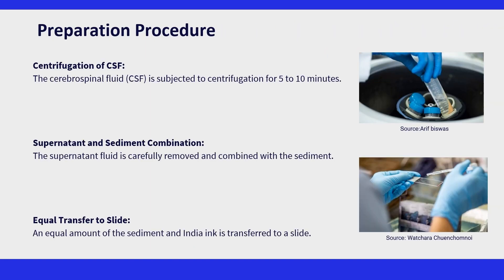As students of microbiology, we should know how to prepare our own India ink stain so that in conditions of uncertainty we are prepared to perform the staining procedure. Cerebrospinal fluid should undergo centrifugation for 5 to 10 minutes. This process separates the sample into different layers based on density. After centrifugation, the top layer of supernatant is removed, eliminating the liquid portion and leaving the sediment behind. The removed supernatant fluid is then combined with the sediment to ensure all relevant components are included in the staining process.